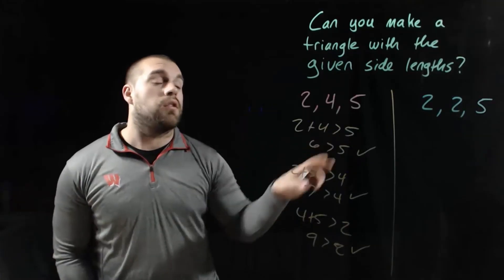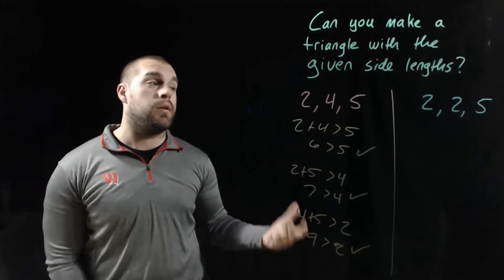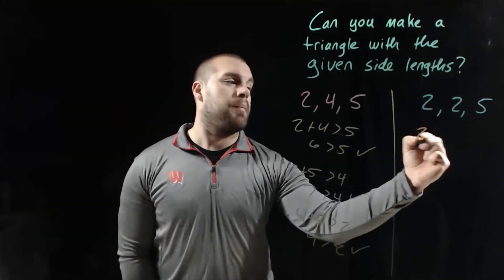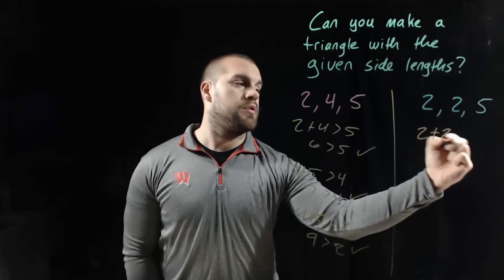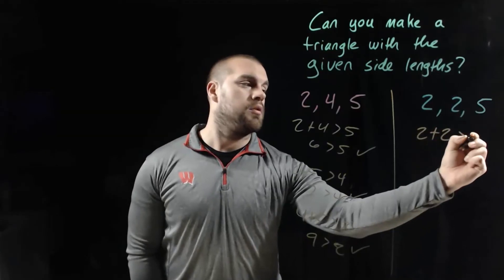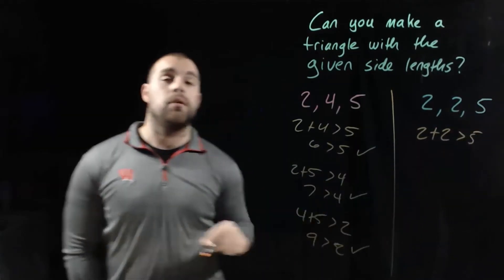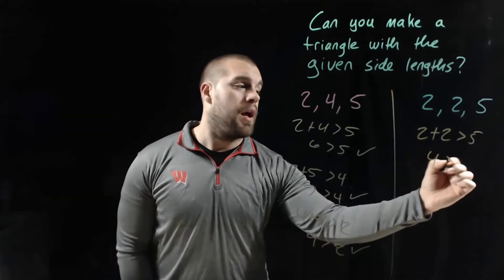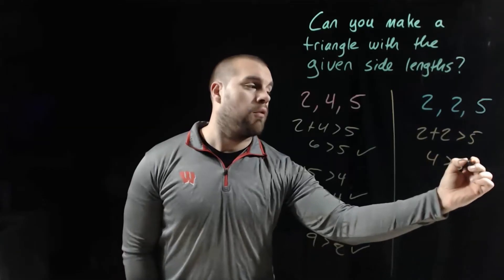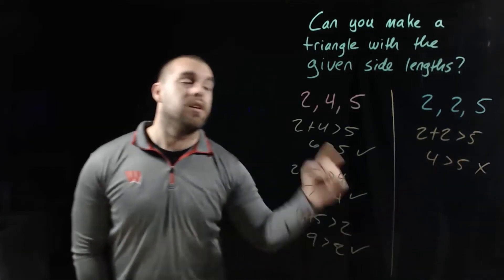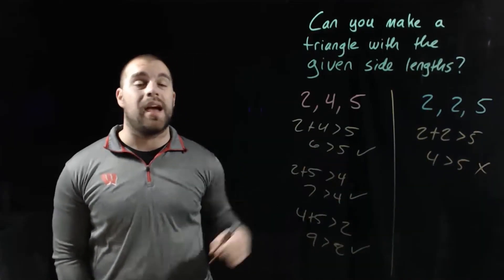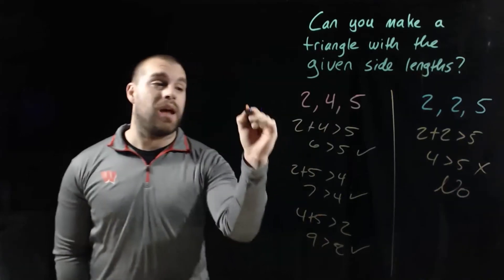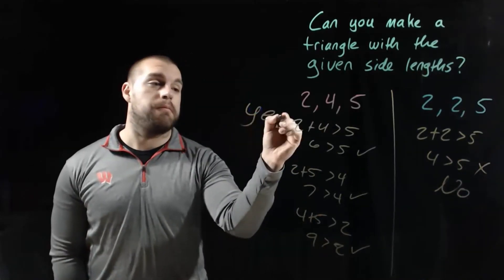Now let's look at side lengths 2, 2, and 5. Right away, if we add up those first two sides, 2 plus 2 has to be greater than 5. But 2 plus 2 is only 4, and 4 is not greater than 5. So no, we cannot make a triangle with those side lengths. But yes, we can with the first set.